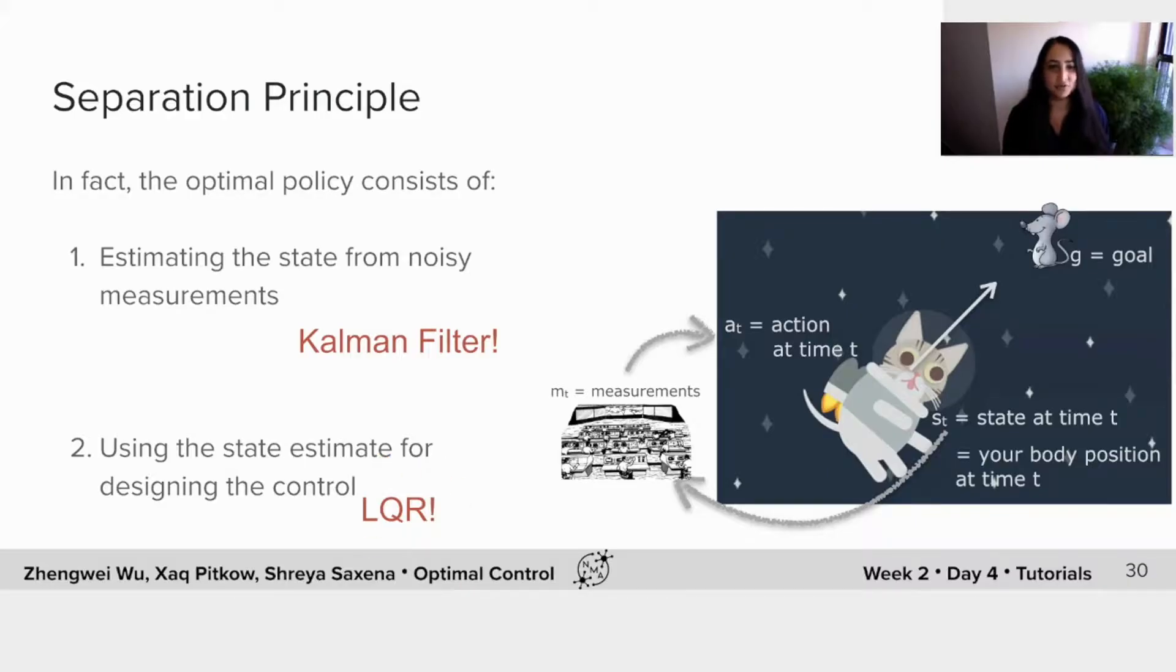The combination of these two things is actually called a linear quadratic Gaussian controller, or the LQG controller.